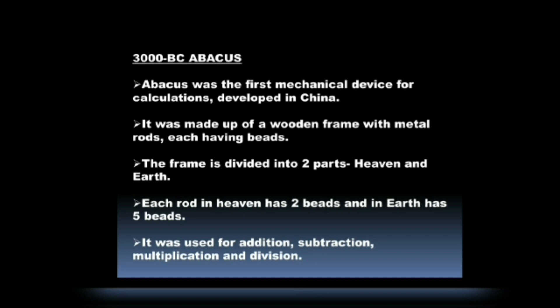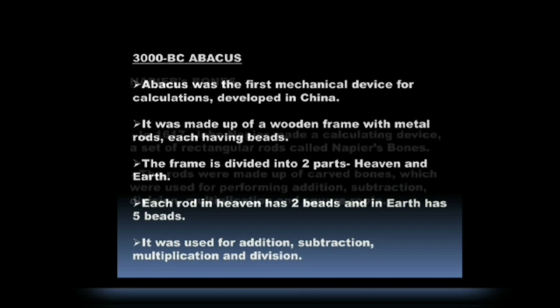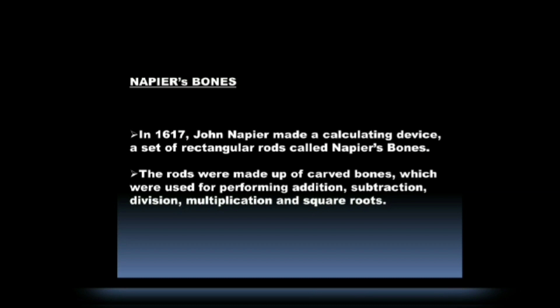The Abacus was used for addition, subtraction, multiplication, and division. Number 2, Napier's Bones. In 1617, John Napier made a calculating device — a set of rectangular rods called Napier's Bones.